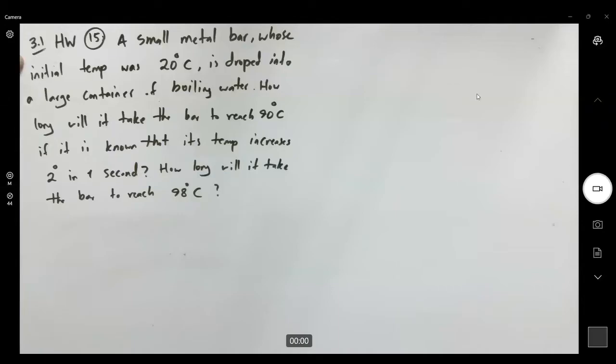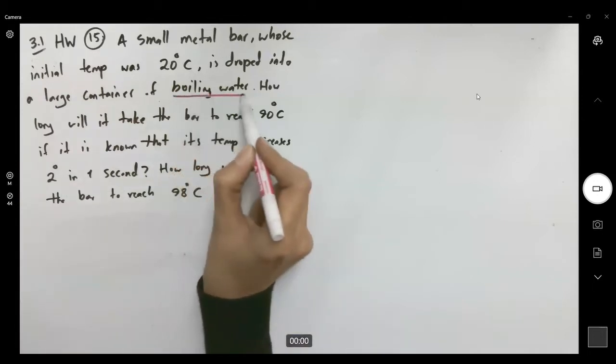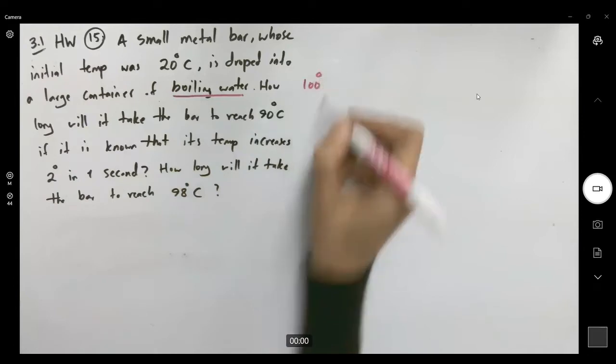Let's take a look at number 15. A small metal bar whose initial temperature was 20 degrees centigrade is dropped into a large container of boiling water. Boiling water, you know that the temperature of boiling water is 100 degrees.